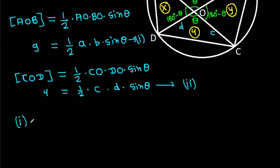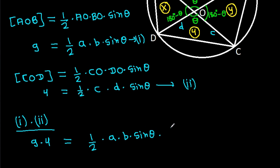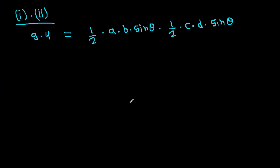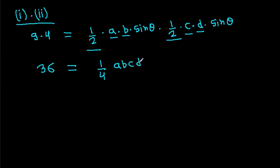If we multiply equation 1 and equation 2, then 9 times 4 equals one-half times A times B times sin theta, times one-half times C times D times sin theta. So 36 equals one-fourth times A times B times C times D times sin squared theta.